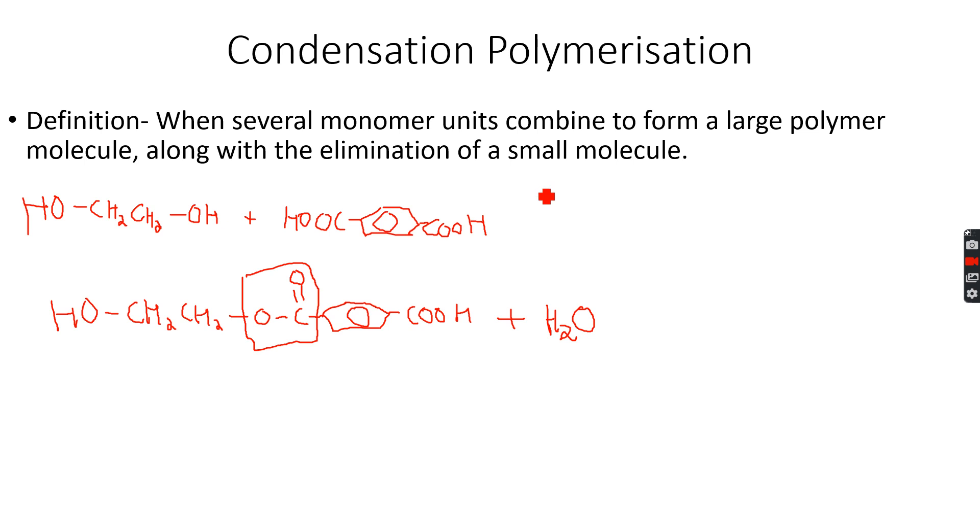Now that this means that I will have to react an alcohol. Now the special thing about both these molecules is that they have the functional group on both sides, on both ends. Like ethane 1,2 diol has the OH group on both ends. And benzene 1,4 dicarboxylic acid has the carboxylic acid group on both ends. So that means if I am reacting several molecules together.